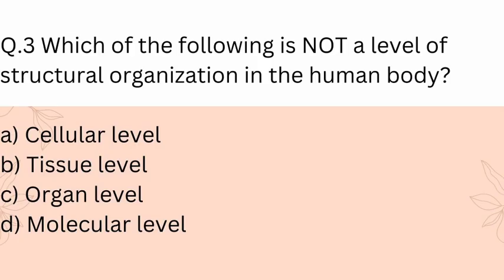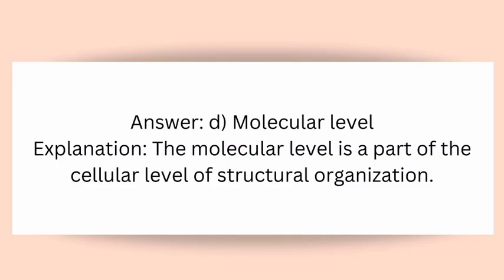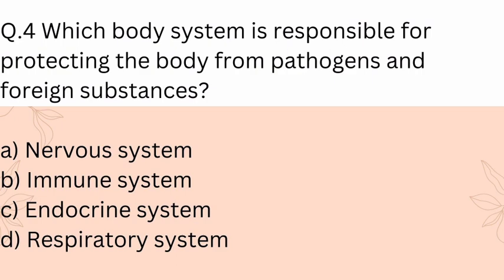Question 3: Which of the following is not a level of structural organization in the human body? A) Cellular level, B) Tissue level, C) Organ level, D) Molecular level. Answer: D) Molecular level. Explanation: The molecular level is part of the cellular level of structural organization.